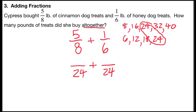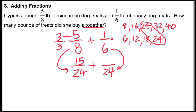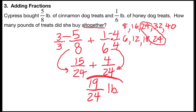Now I'm going to rename my fractions. Eight times what number gave me twenty-four? That was three, so I multiply by the form of one: three over three. Three times five is fifteen, so five-eighths is renamed as fifteen twenty-fourths. For one-sixth: six times what number is twenty-four? That's four, so I multiply by four over four. One times four is four. Now I can add: fifteen twenty-fourths plus four twenty-fourths. Fifteen plus four is nineteen, keeping the same denominator of twenty-four. Nineteen and twenty-four have no common factors, so Cypress bought nineteen twenty-fourths pounds of dog treats altogether.